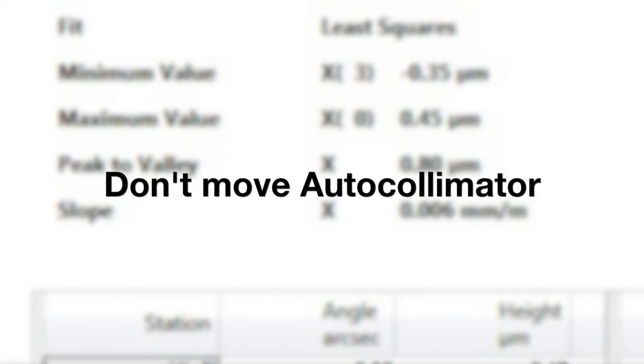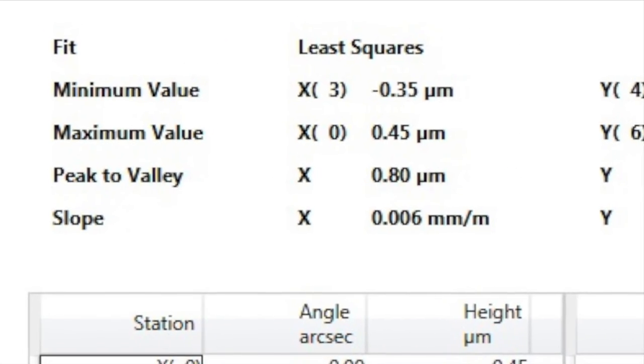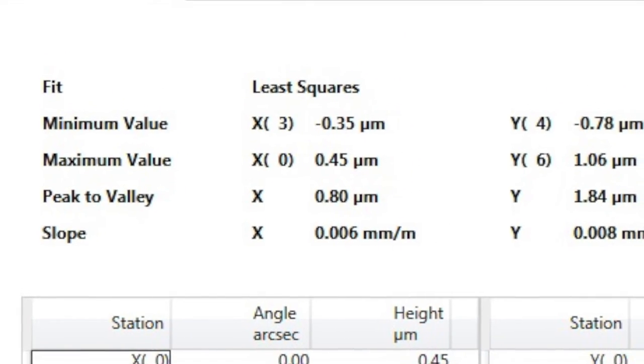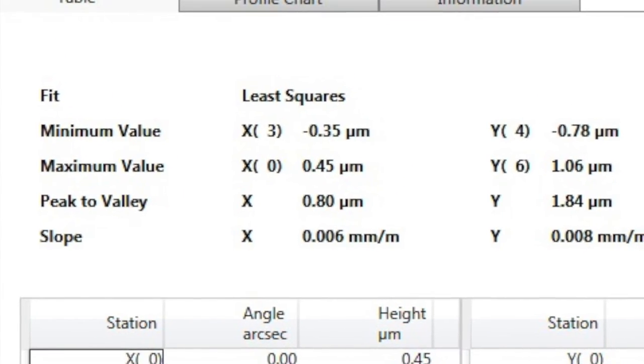The autocollimator is not touched during the measurement. If everything is perfectly square or perfectly parallel, the slope value should be the same. Any difference is the out of squareness.